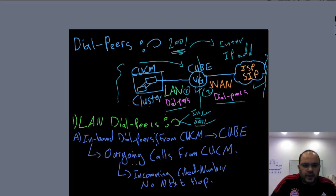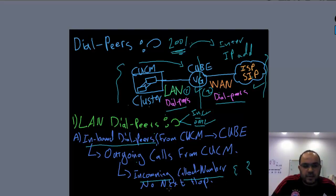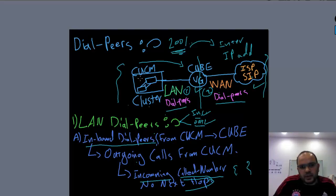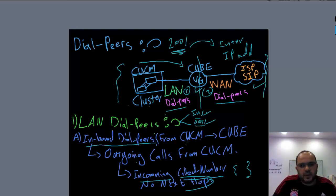The configuration for the inbound dial peer uses 'incoming called-number' with a wildcard to match it. With this one, we don't need to configure a next hop — it is just about matching. What number do I need to match? For example, what extension do I have? I put it inside the called-number. In most cases, we don't have a next hop for this inbound dial peer.